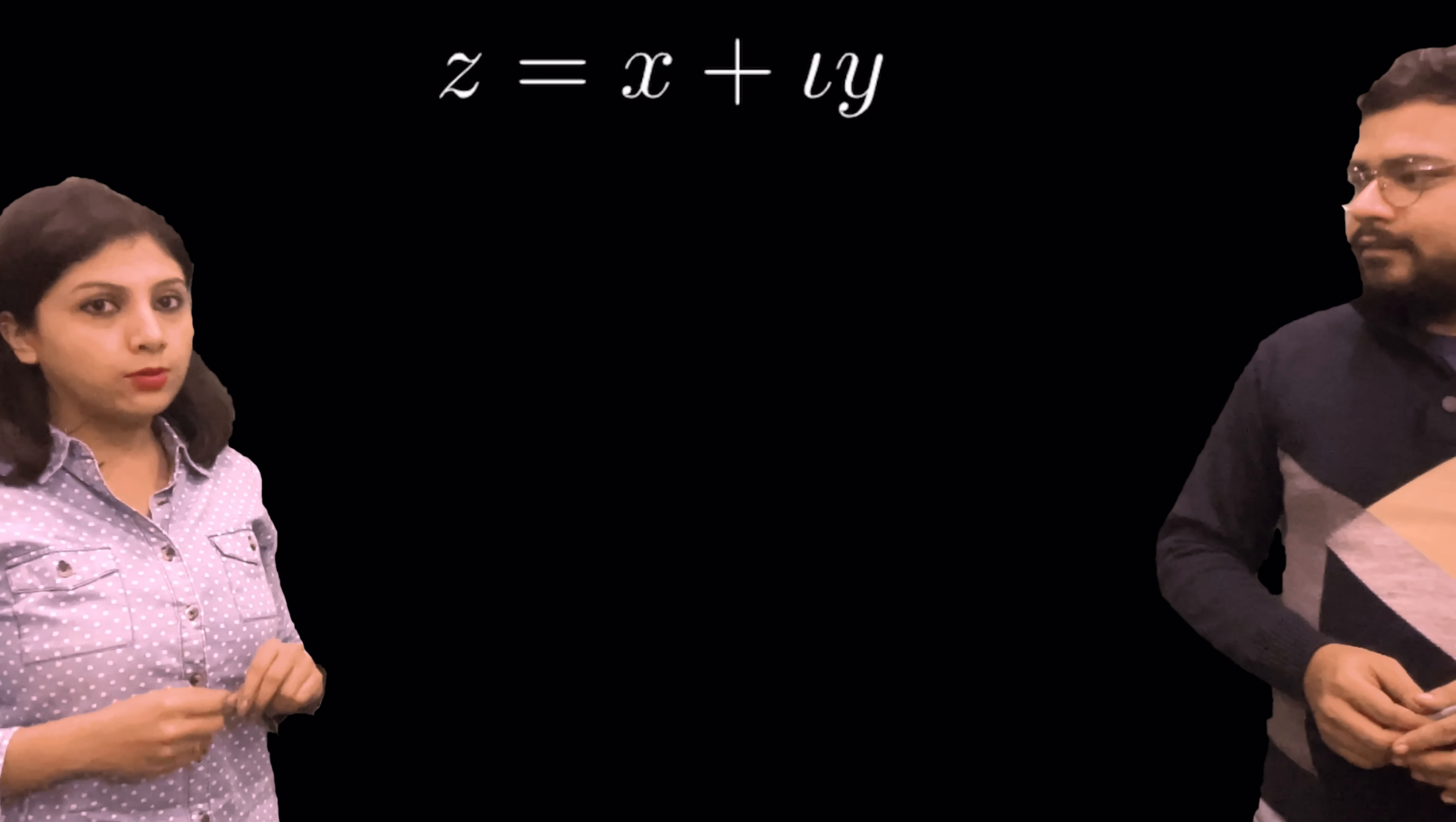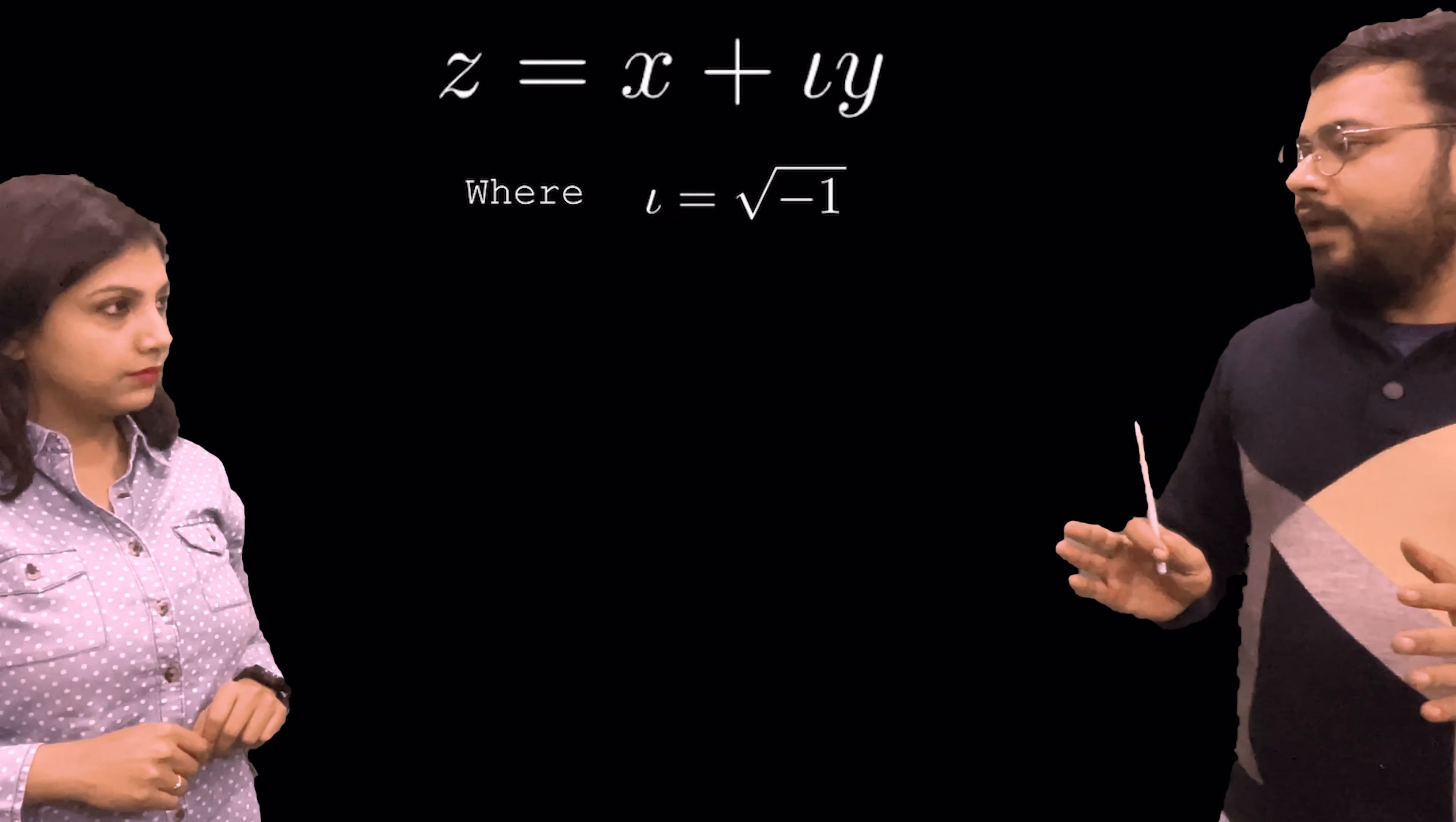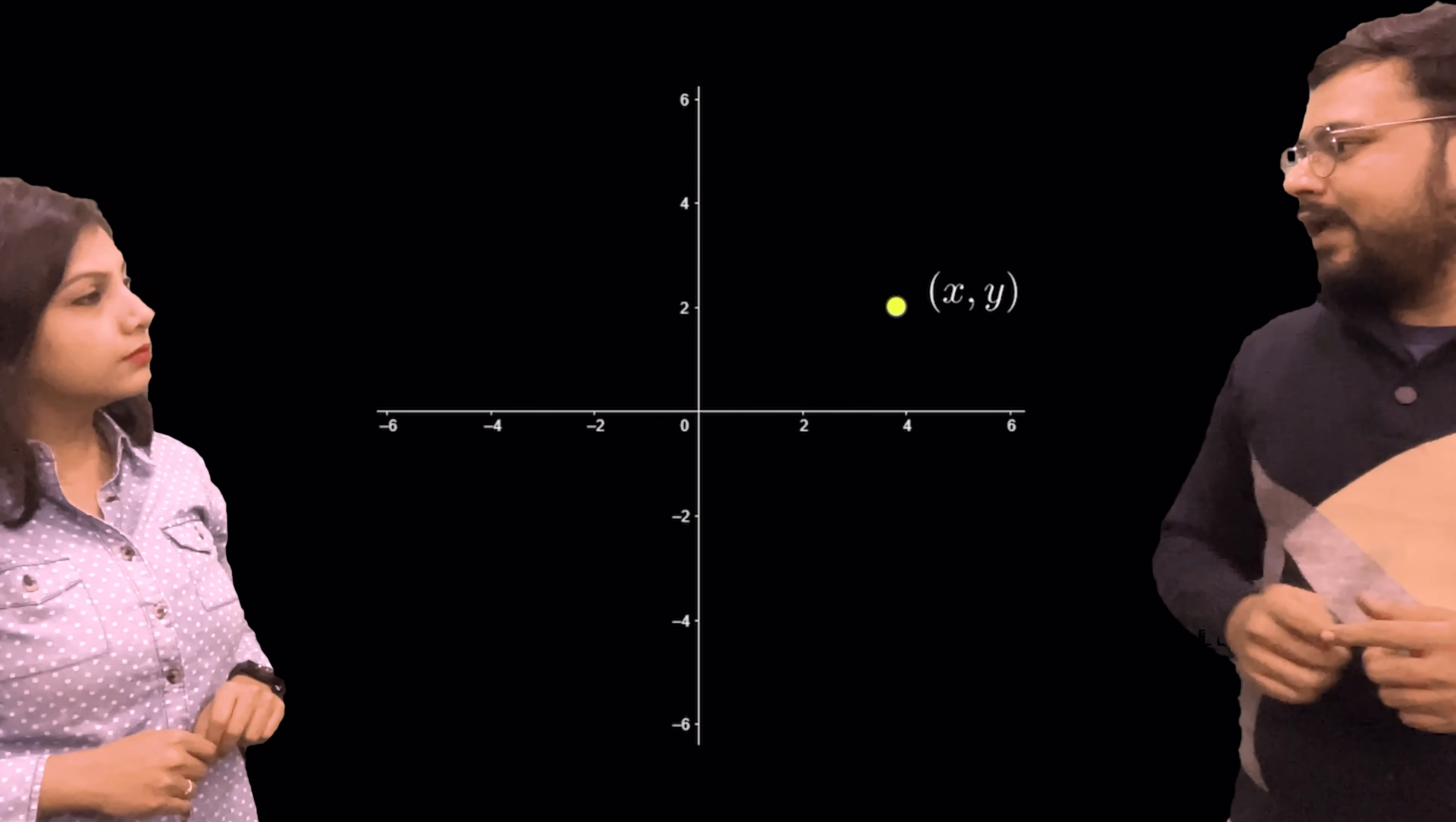First I want to talk about complex numbers. So can you tell me what a complex number is? Yes, any number of the form X plus iota Y is a complex number, where X and Y are the real numbers and iota is the square root of negative 1. But they can also be geometrically interpreted as a point on a plane. So any complex number X plus iY is a point on this plane having the coordinates X and Y.